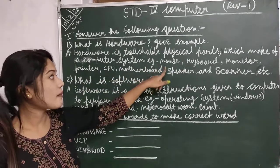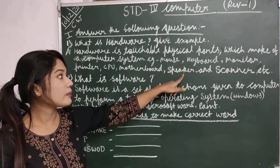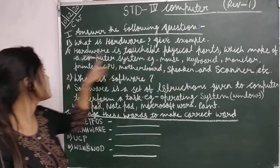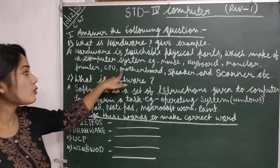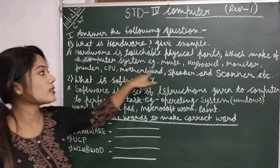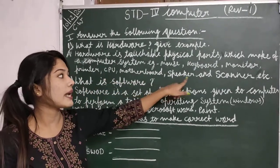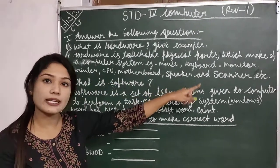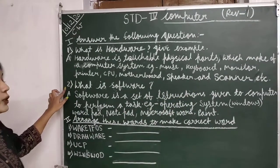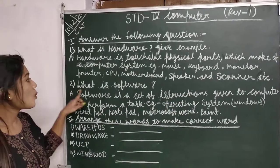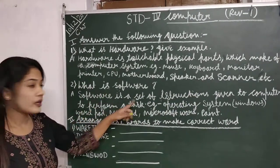For example: mouse, keyboard, monitor, printer, CPU, motherboard, speaker, and scanner, etc. Number 2: what is software?